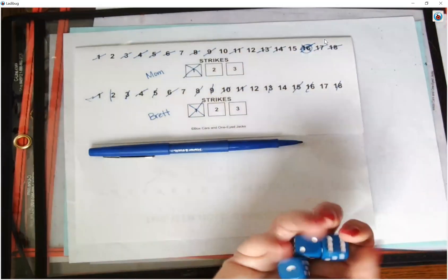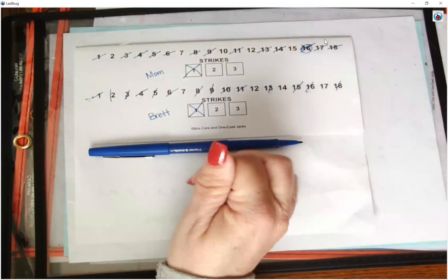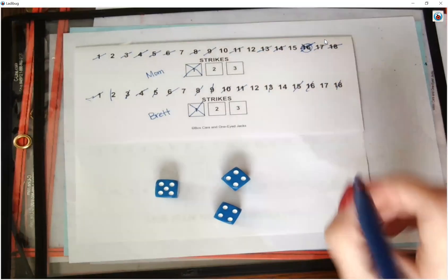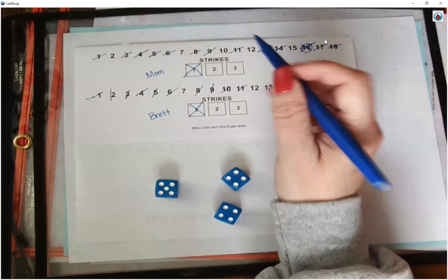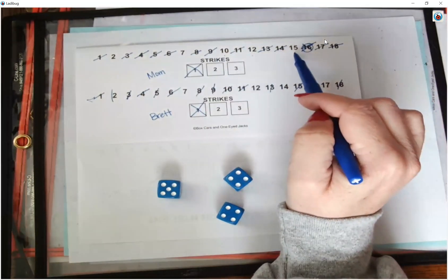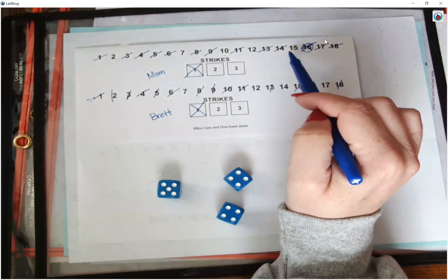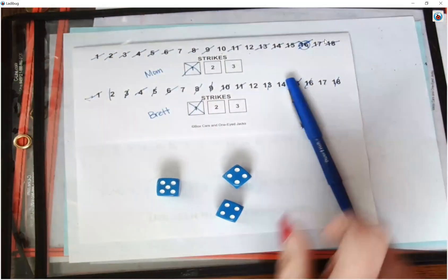If you're the first person to get three strikes you lose or if you're the first person to knock off all 18 of your numbers you win. All right so I have 13. So let's see I have a 2, 10, 12, and a 15. And I have 8 and 5 is 13. So I'm going to do 15 minus 2 equals 13.